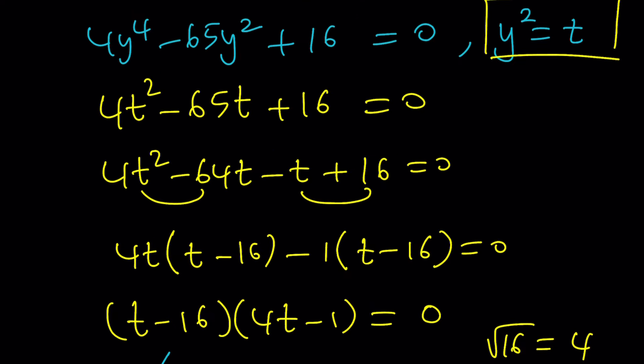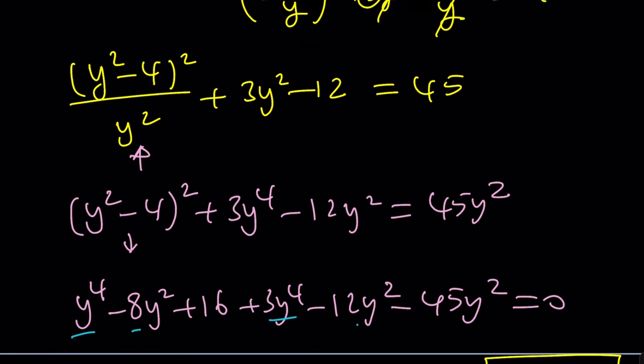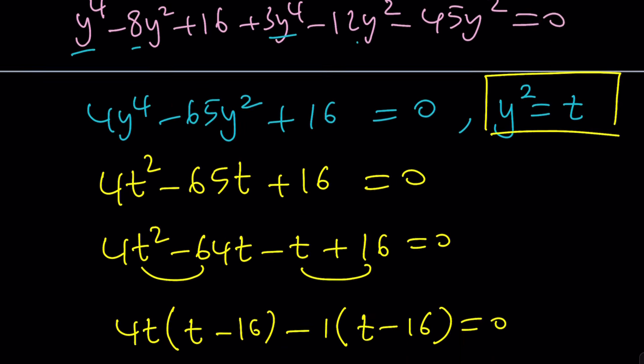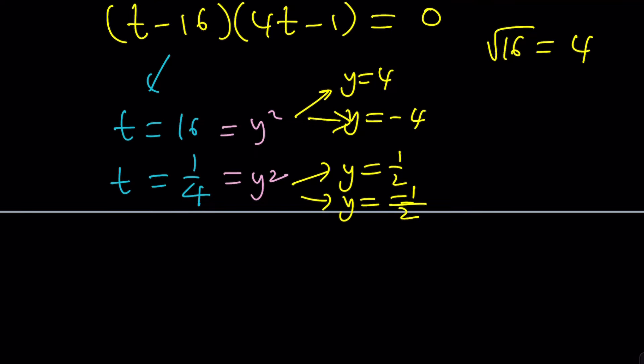So from here, we got the y values. And how can I find the x values? Easy. Use one of the equations. Or if you remember, we replace x with y squared minus 4 over y. x was y squared minus 4 over y. So, for example, if y is equal to 4,